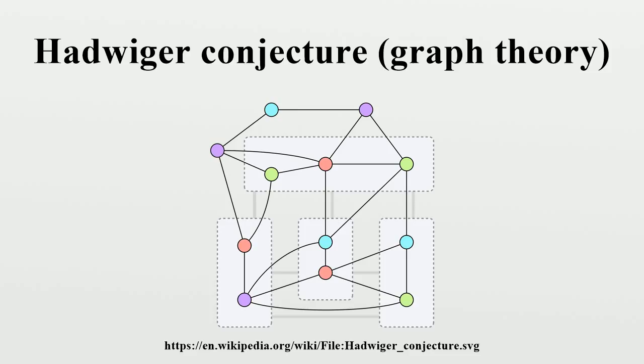In the same paper in which he introduced the conjecture, Hadwiger proved its truth for K_4. The graphs with no K_4 minor are the series parallel graphs and their subgraphs. Each graph of this type has a vertex with at most two incident edges. One can three color any such graph by removing one such vertex, coloring the remaining graph recursively, and then adding back and coloring the removed vertex.